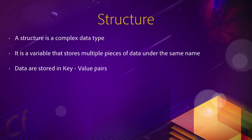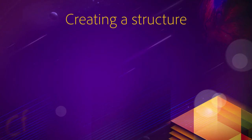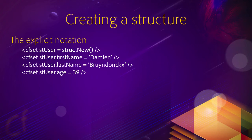What does that mean? And most importantly, how can we create such a structure? ColdFusion offers us two methods to create a structure. The first method is called the explicit notation. In the explicit notation, we use a bunch of CF set statements to create a structure. The first one - cfset stuser equals structNew() - that is the statement that creates a variable. In this case, the variable is called stuser, and inside of that variable, we create an empty structure. StructNew() is a ColdFusion function that returns an empty structure.